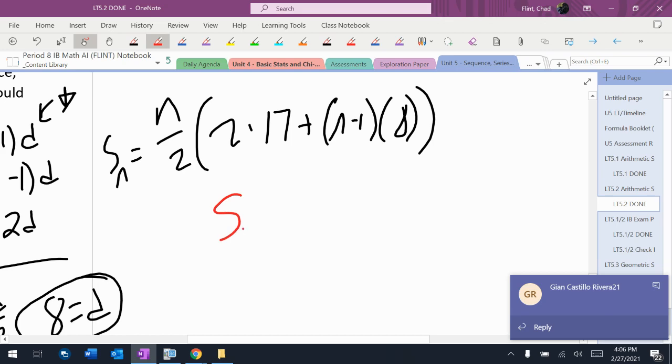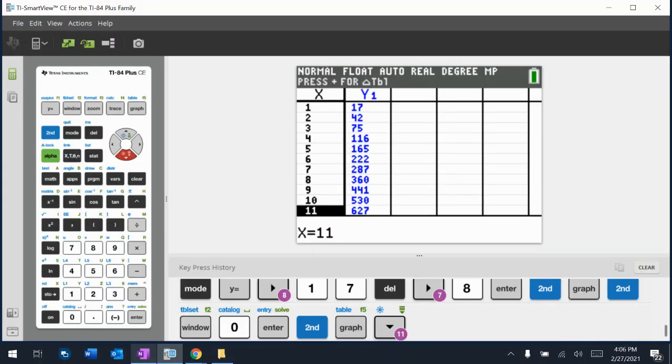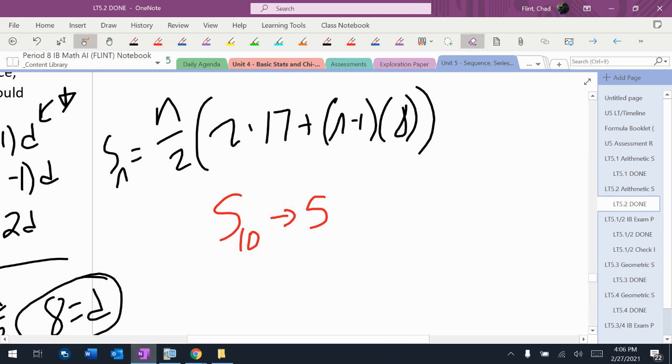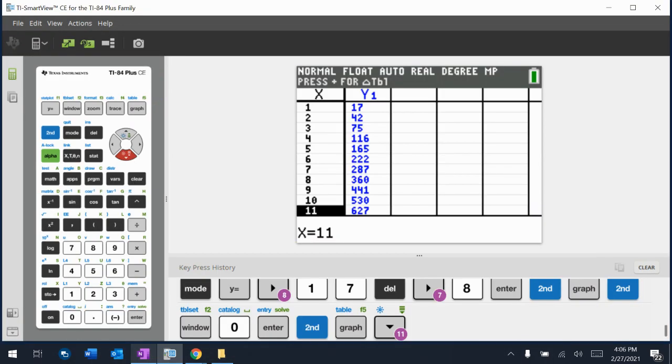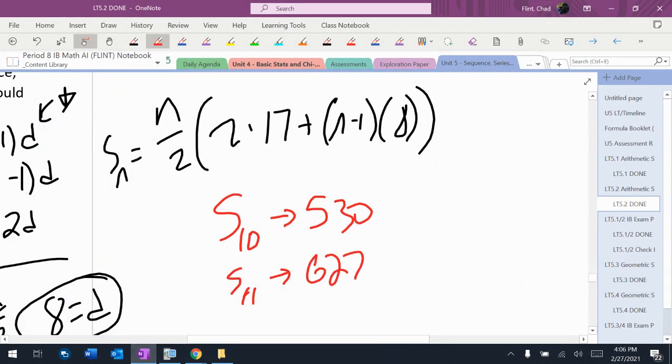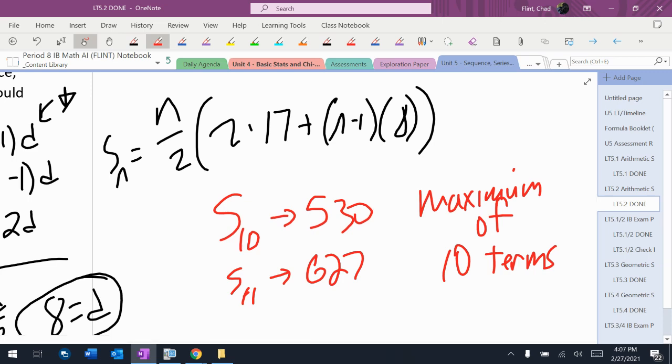So I'm going to go here and say S10 is 530, S11 is 627. So maximum of 10. And remember in the calculator the x is the n value. So 10 terms, 530, that's okay. But if I go 11 terms it's 627 and that's too much for what I had in my original problem.